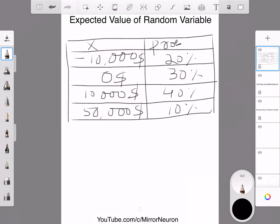Now, this is the information you got. So, our random variable has four values. This is minus 10k, 0, then you have positive 10k, and then you have 50k, right? These are the random values that your random variable can have.